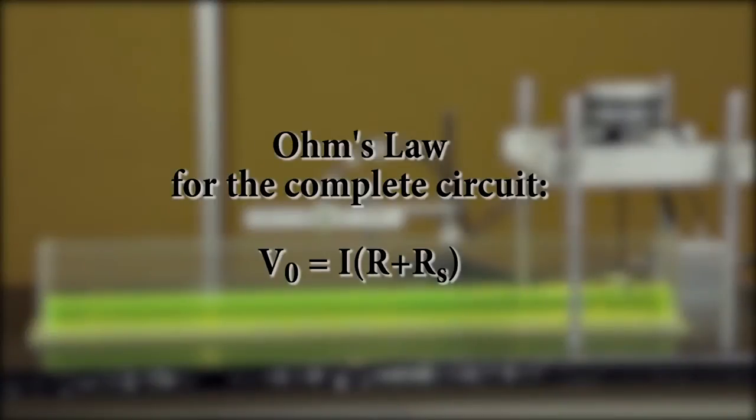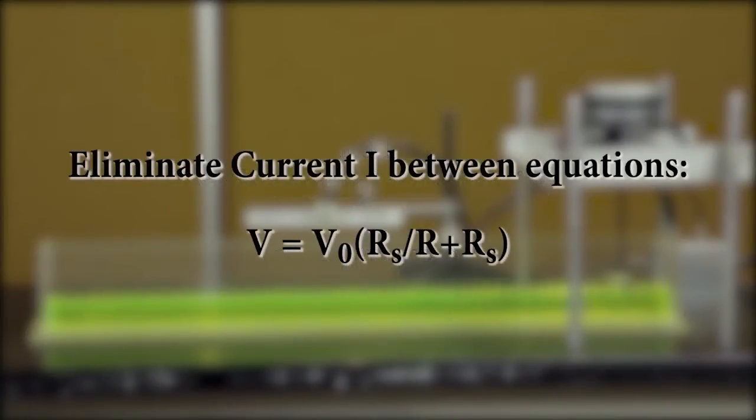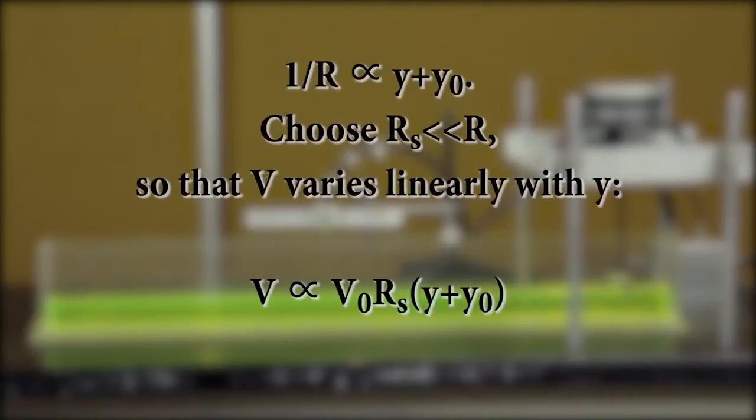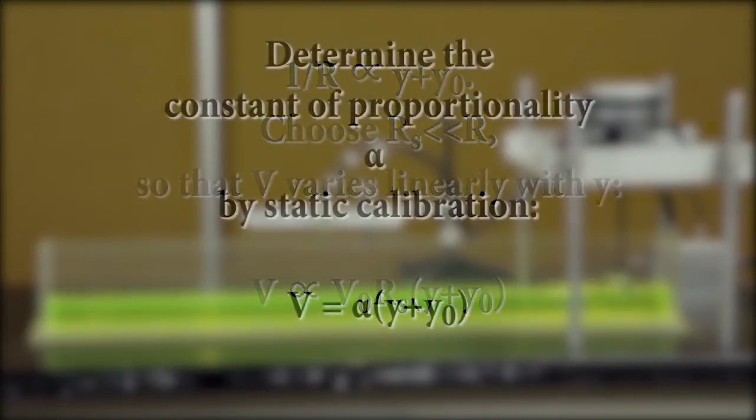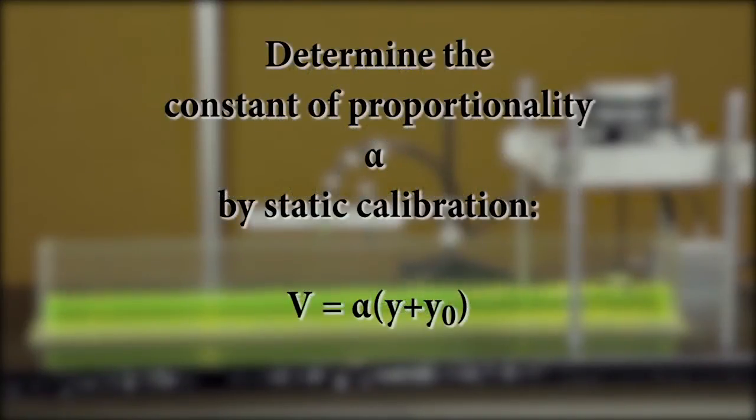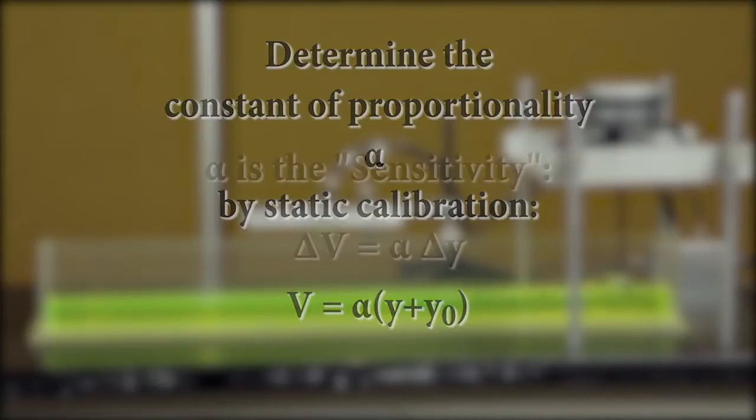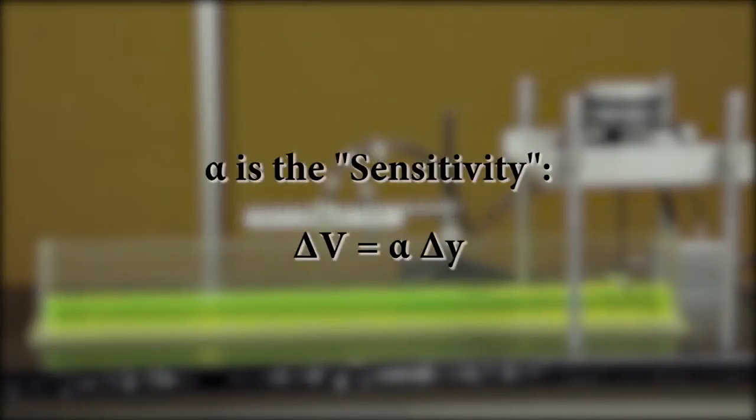For example, if the wave height doubles, the voltage doubles. Static calibration of the sensor then yields a specific number of millivolts per millimeter of the change in height of the liquid. This quantity is called the sensitivity. By measuring the voltage, we can then determine the wave height by simply dividing the voltage by the sensitivity.